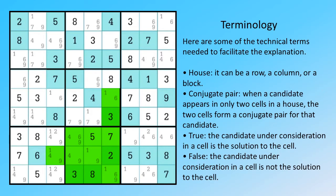Here are some of the technical terms needed to facilitate the explanation. House: it can be a row, a column, or a block.